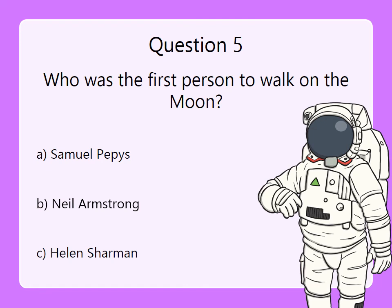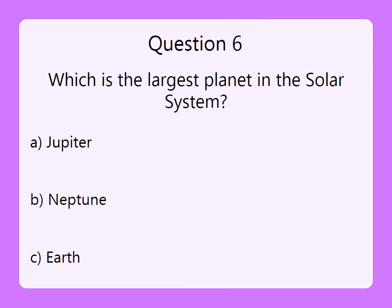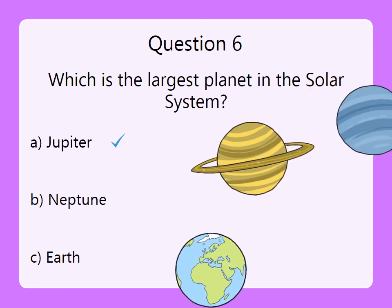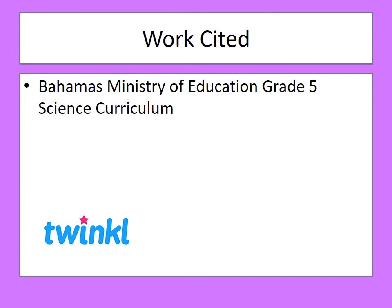Question five: who was the first person to walk on the moon? Take a wild guess if you really didn't study this. That's right — Mr. Neil Armstrong. Very good. Question six: which is the largest planet in the solar system? Jupiter — you are correct. Great job, guys. Thank you for watching, thank you for listening, thank you for learning.